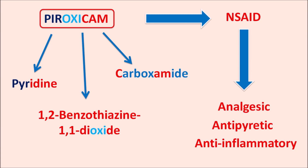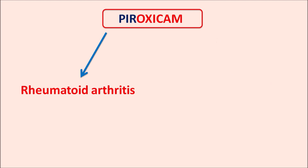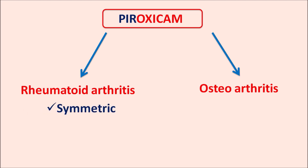In this video we will discuss how this drug acts, its important precautions, side effects, dosage, and clinical use. The clinical use of pyroxicam: as an NSAID it acts as analgesic, antipyretic, and anti-inflammatory agent. This drug is particularly used in two types of arthritis — rheumatoid arthritis and osteoarthritis. Both affect the bones and joints, but a difference exists: rheumatoid arthritis presents with symmetrical joint disorder.